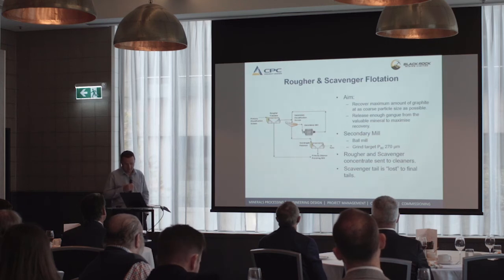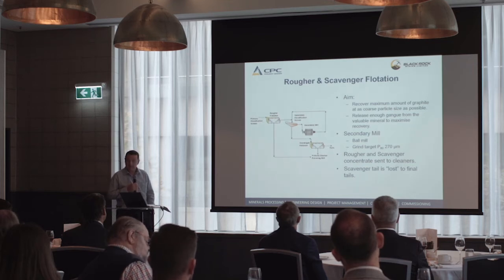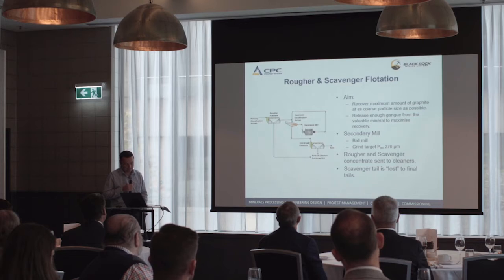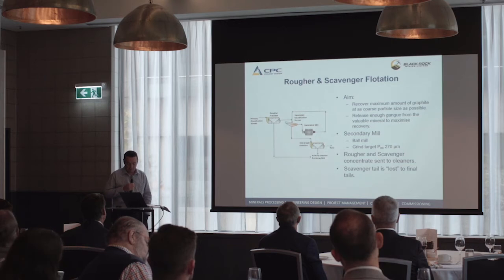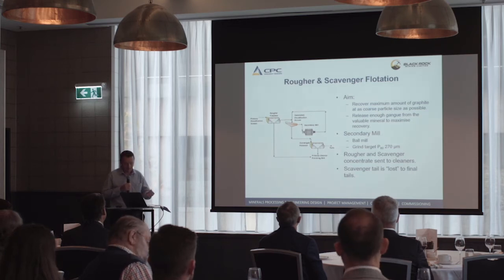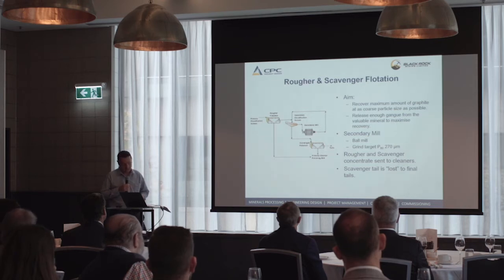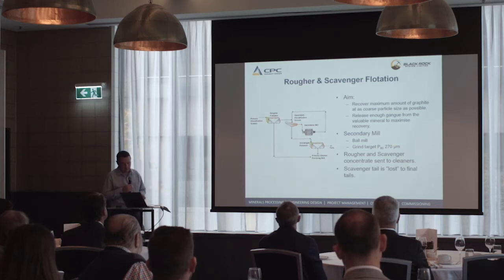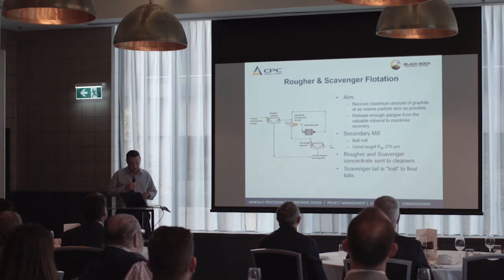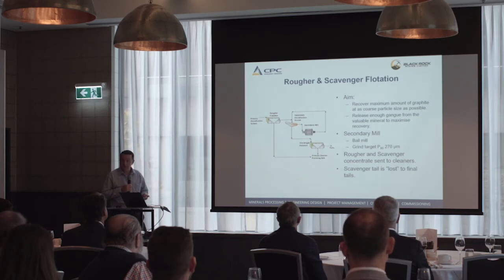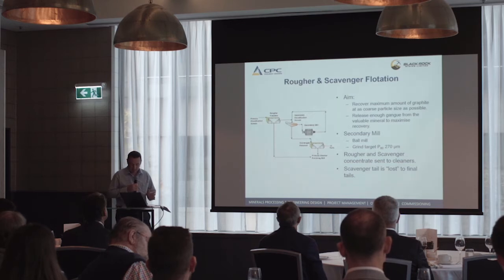Rougher flotation is the first stage of flotation which produces a concentrate. The objective is to recover the maximum amount of graphite at as coarse a particle size as practical. There's less emphasis on quality at this stage — complete liberation of graphite is not required, only sufficient liberation to release enough gangue material for high recovery. Scavenger flotation is applied to the rougher tailings to recover any graphite not recovered during roughing, achieved by a secondary grinding mill targeting a P80 of 270 microns. The combined rougher-scavenger recovery is 96.5%, with approximately 3.5% of graphite lost to scavenger tails.